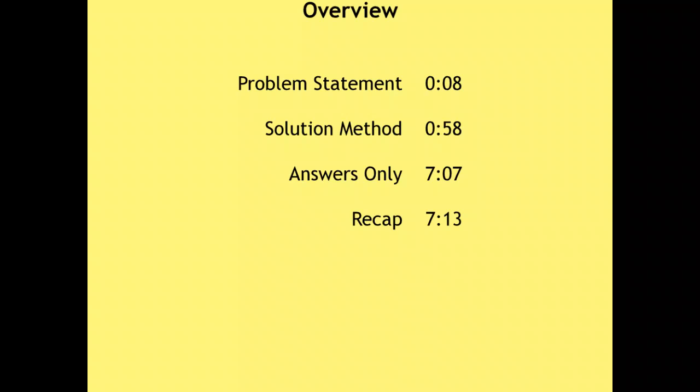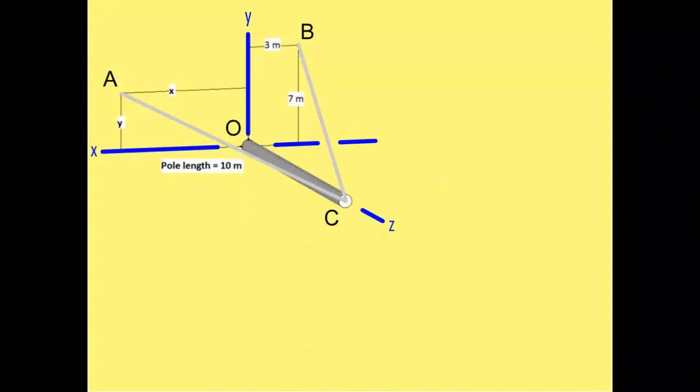Welcome to this example on three-dimensional forces and vectors. The following is an overview of this video. We have a pole that is in contact with a surface and it has two supporting cables. This could be thought of as the top view of a flagpole or as some structure coming out of a wall.